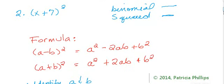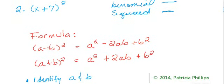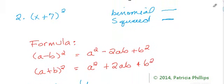So the second problem, number two, we have x plus 7 squared. And we're going to ask ourselves the same questions that we asked before. Is it a binomial? Check. Is it squared? Check. Then we have an issue of squaring a binomial.